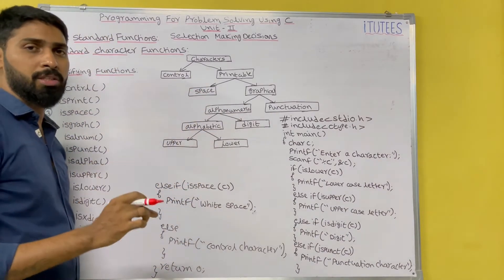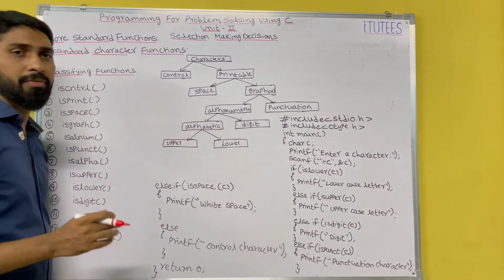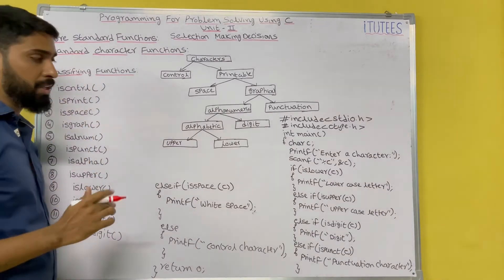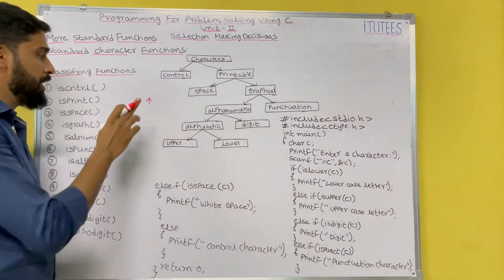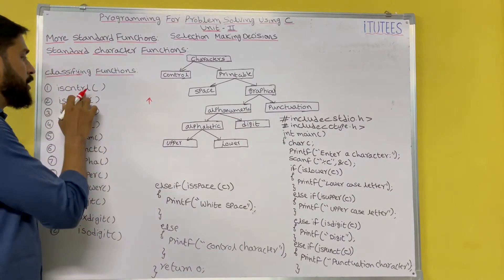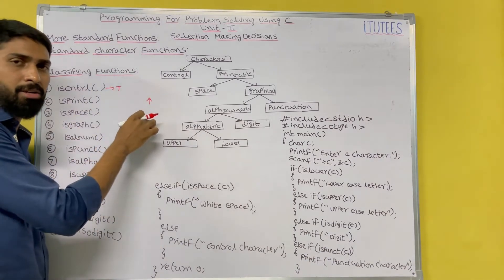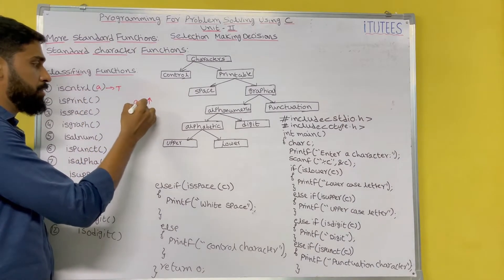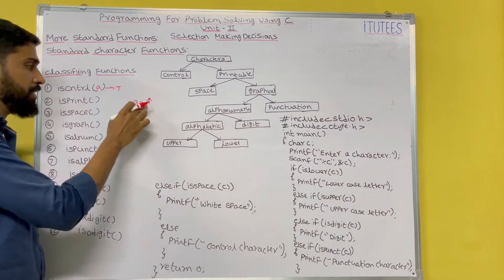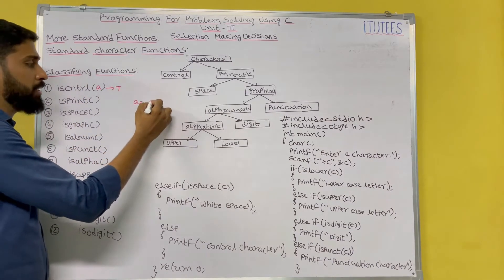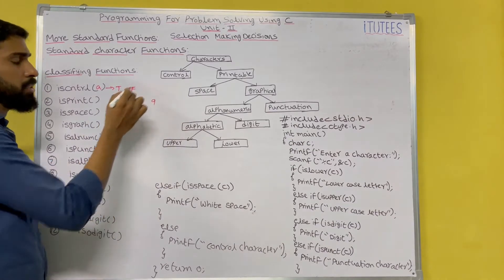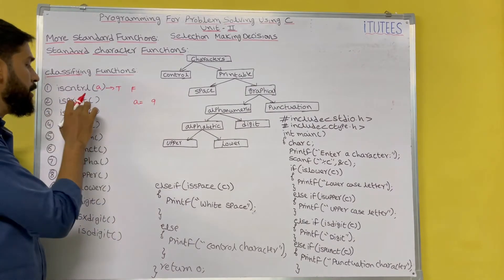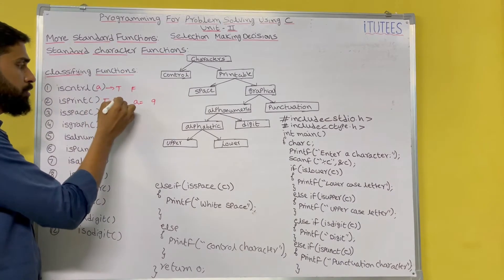Now, how are we going to know which key you are going to press? We have predefined classifying functions. First one is iscntrl. If I press an arrow button, then this function becomes true. If I press arrow and it is assigned to a variable, we can check that variable. For example, I press enter — that is assigned to variable A. Now, iscntrl(A): if it is an arrow, then it returns true. If I press number nine, then it returns false. Similarly, isprint — except the control character, all characters belong to printable. If it is printable, it returns true, otherwise false.